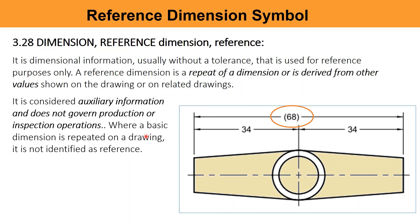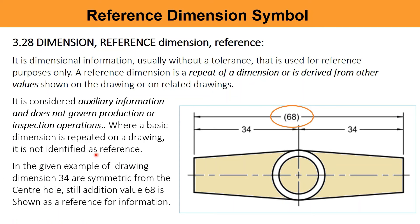Where a basic dimension is repeated on a drawing, it is not identified as a reference. In the given example of drawing, dimension 34 are symmetric from the center hole. Still, addition value 68 is shown as a reference for the information.